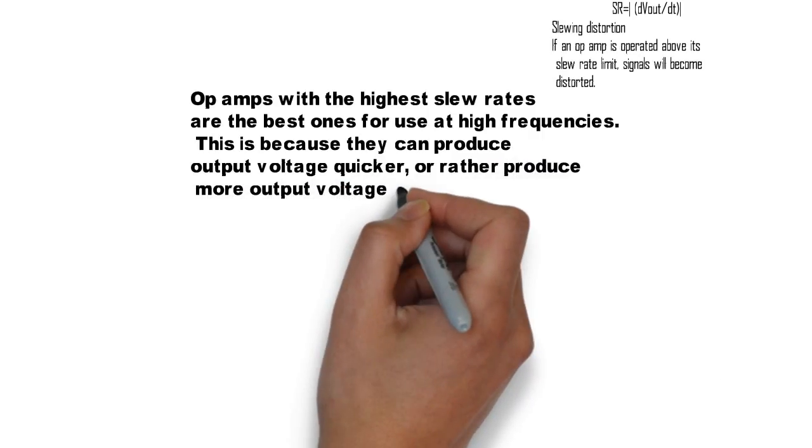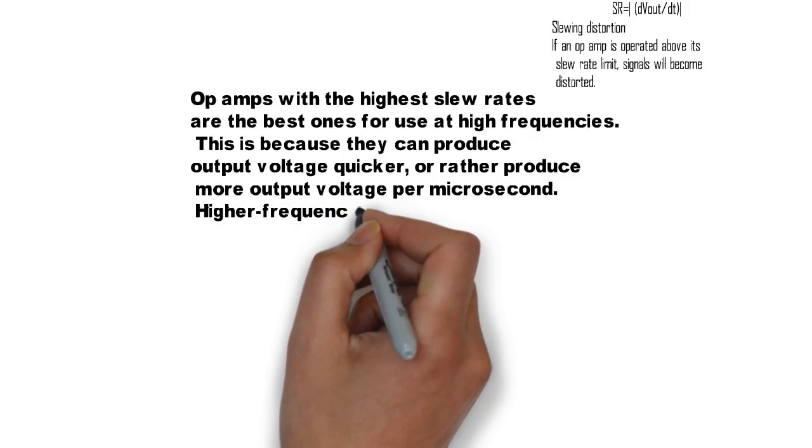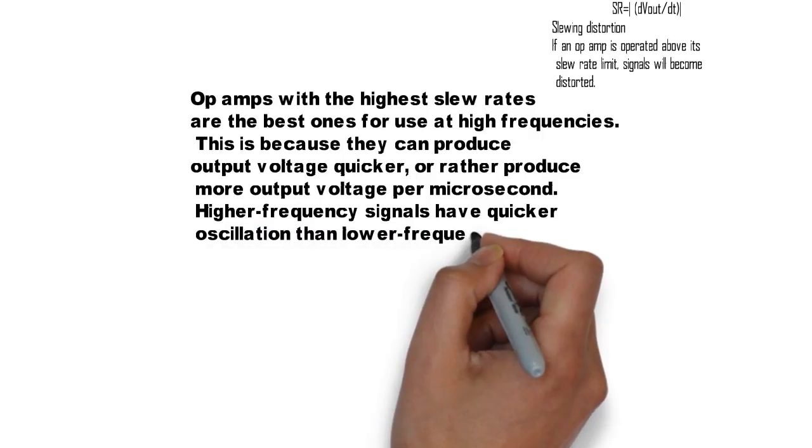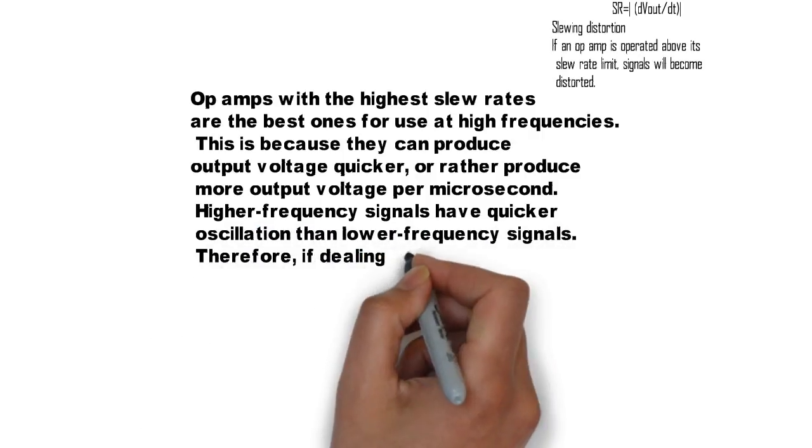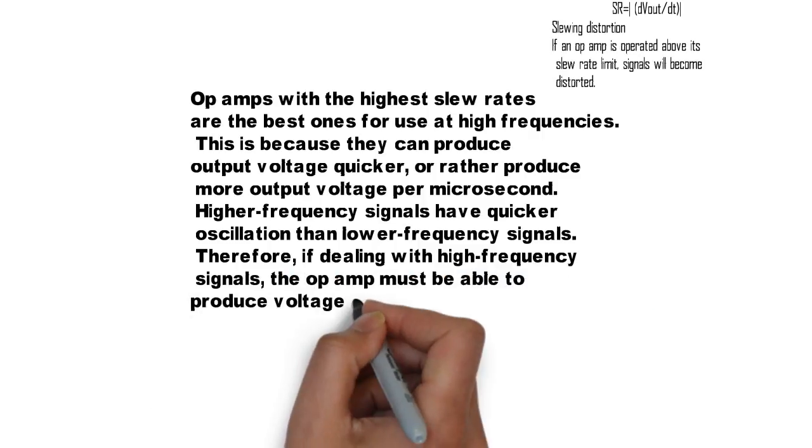Higher frequency signals have quicker oscillation than lower frequency signals. Therefore, when dealing with higher frequency signals, the op-amp must be able to produce voltage at a quicker rate.